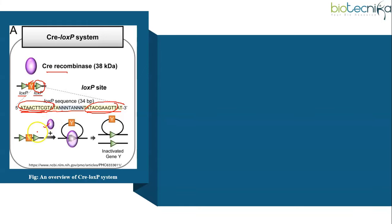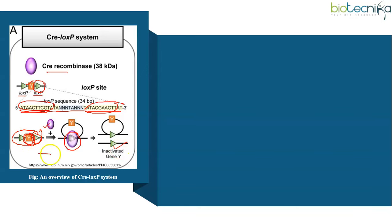CRE recombinase will recognize and bind to one LOX-P site, and the dimer formed then binds to another LOX-P site to form a tetramer. LOX sites are directional and the two sites joined by the tetramer are parallel in orientation. Double-stranded DNA is cut at both LOX-P sites by the CRE protein, and the strands are then rejoined with DNA ligase in a quick and efficient process.